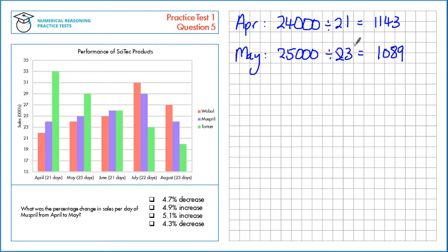We want the percentage change between these two parts, so 1,089 is the new value, subtract the old value, divided by the old value and multiplied by 100, which gives us negative 4.7%, or a 4.7% decrease.